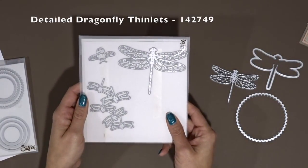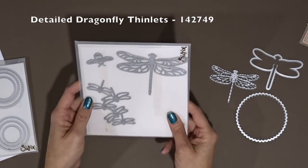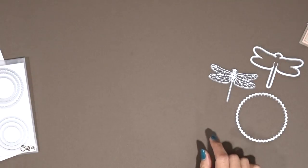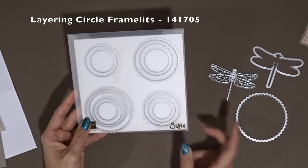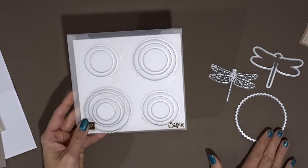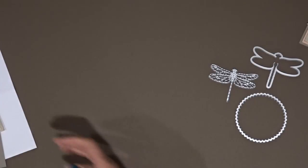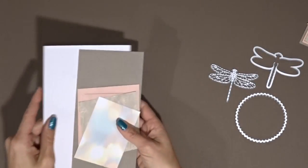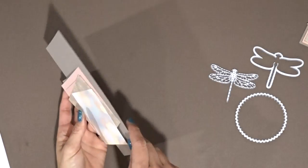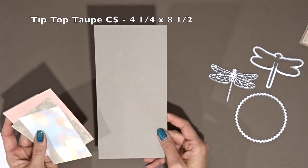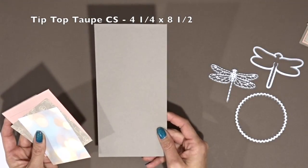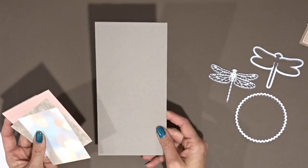The detailed dragonfly thinlits, we're going to be using these two from it. And then we're going to be using the layering circles framelits. We're going to be using the largest scallop circle.